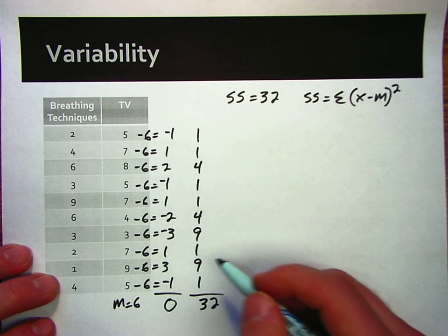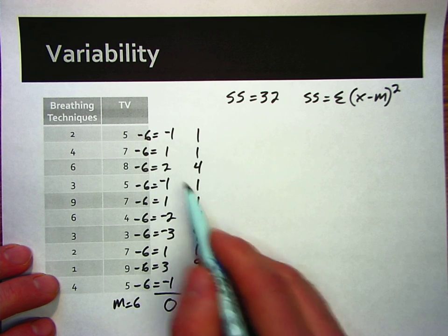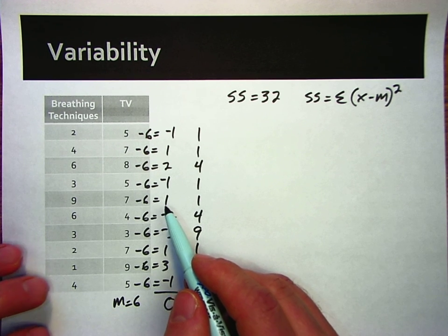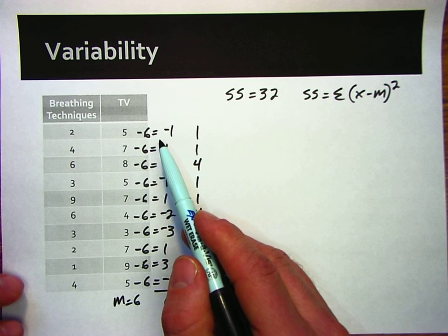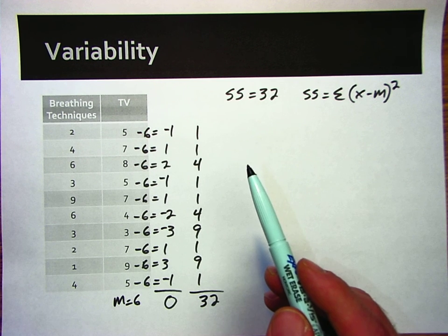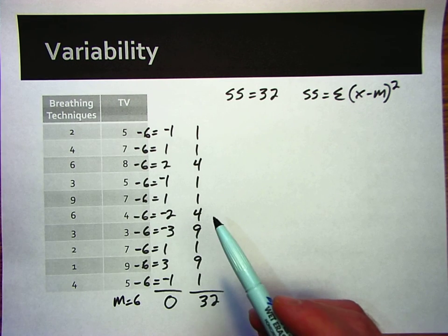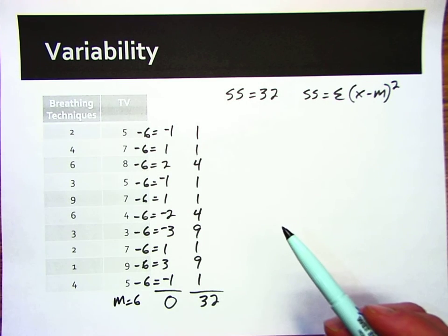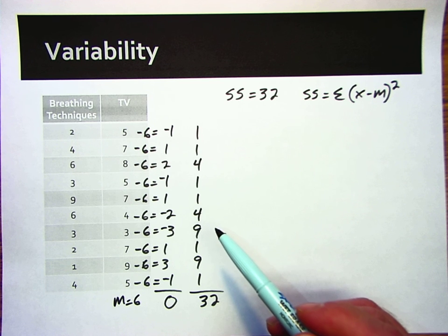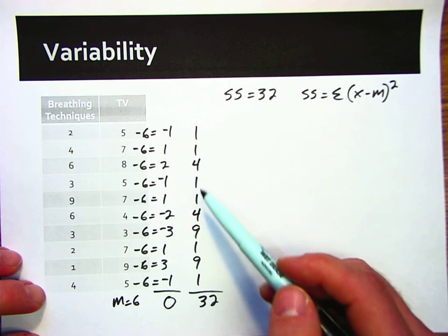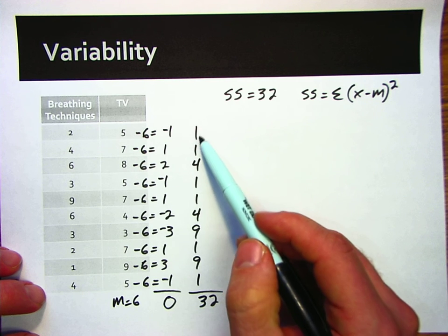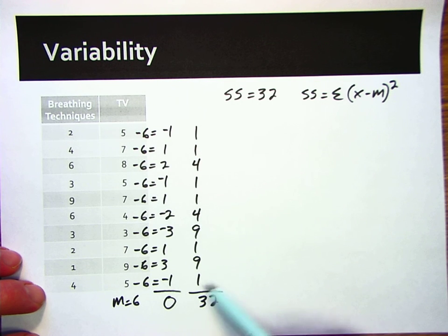So in a little bit, I'll show you the computational formula. Usually we don't use this definitional formula as much because rarely do we have a nice round number for the mean. And so it gets a little more cumbersome to use when we're looking at two decimal places out and subtracting that score from each of these. So we have what's called a computational formula that's a little easier to work with. But I wanted to show you the definitional formula because I want you to have something concrete in your head about what the sum of squares is. Because you're going to see this throughout the class. The sum of square deviations from the mean. So these are the square deviations, and we sum those up to get this score of 32.